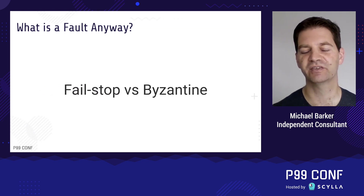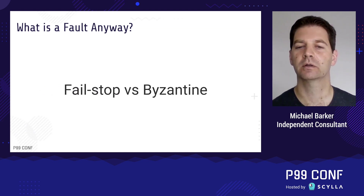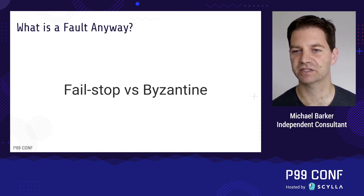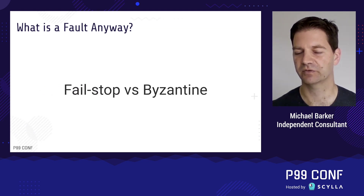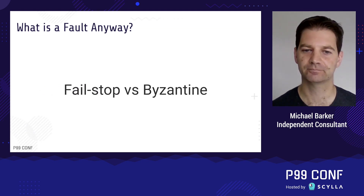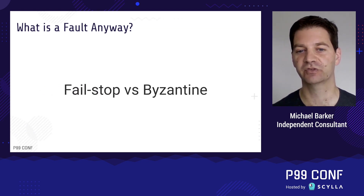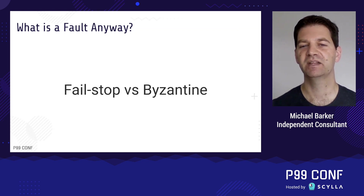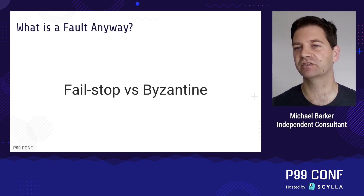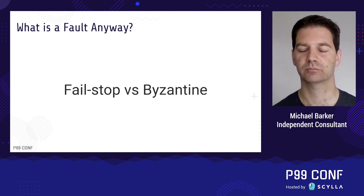The other type of fault is called Byzantine. This is when a service or component continues to work but sends wrong information — stuff that's weird. This could be unintentionally weird, the result of a software bug, data corruption, or misconfiguration. Or it could be intentionally weird — the result of a malicious actor that has compromised one of the nodes and is trying to damage the rest of the system. To be fault tolerant means that in the face of some number of these faults, the system continues to run and return correct results to your users.